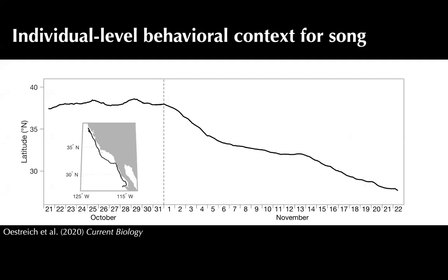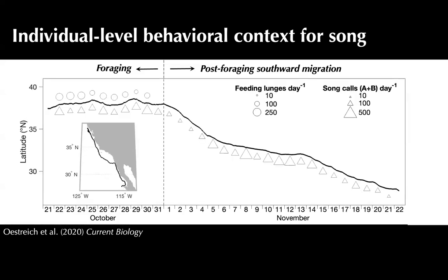Occasionally we can keep tags on animals for much longer periods to capture migration in addition to foraging behavior. Here, a line indicates the latitude of a tagged individual over a roughly month-long period, with the track in the inset map towards breeding grounds off Central America. A dashed line indicates the foraging period versus the post-foraging southward migration. We can overlay every detected feeding lunge and every detected song call event, showing this animal was singing throughout the month it carried the tag but only feeding during the pre-migration period.